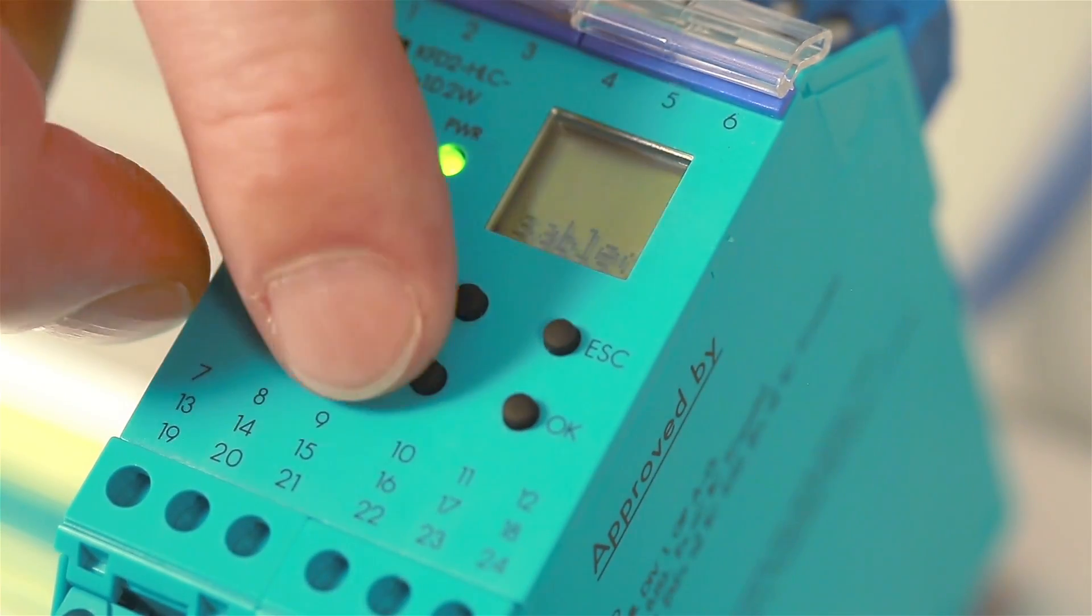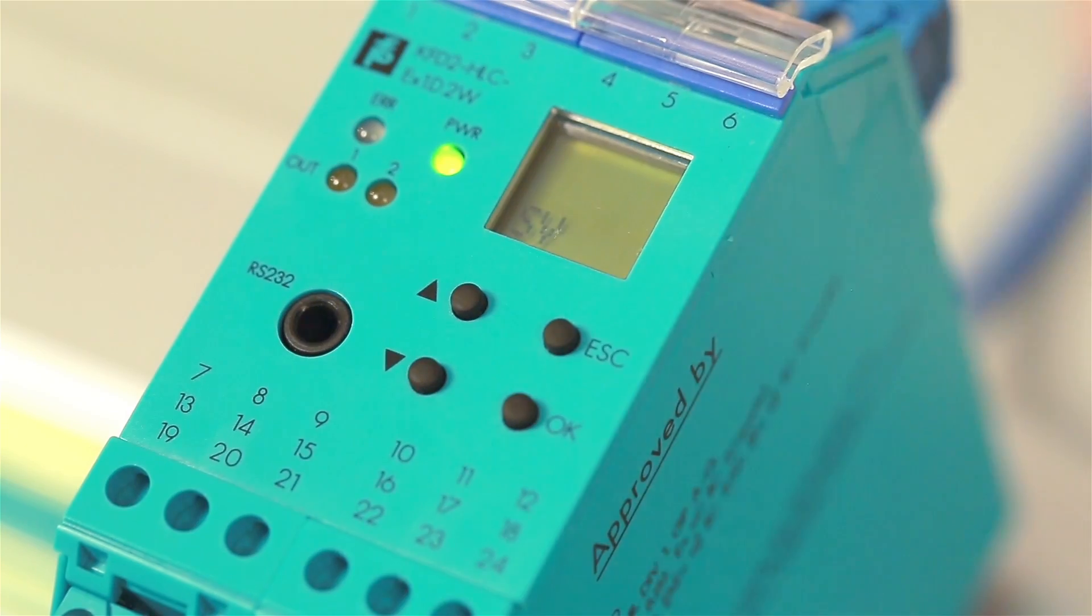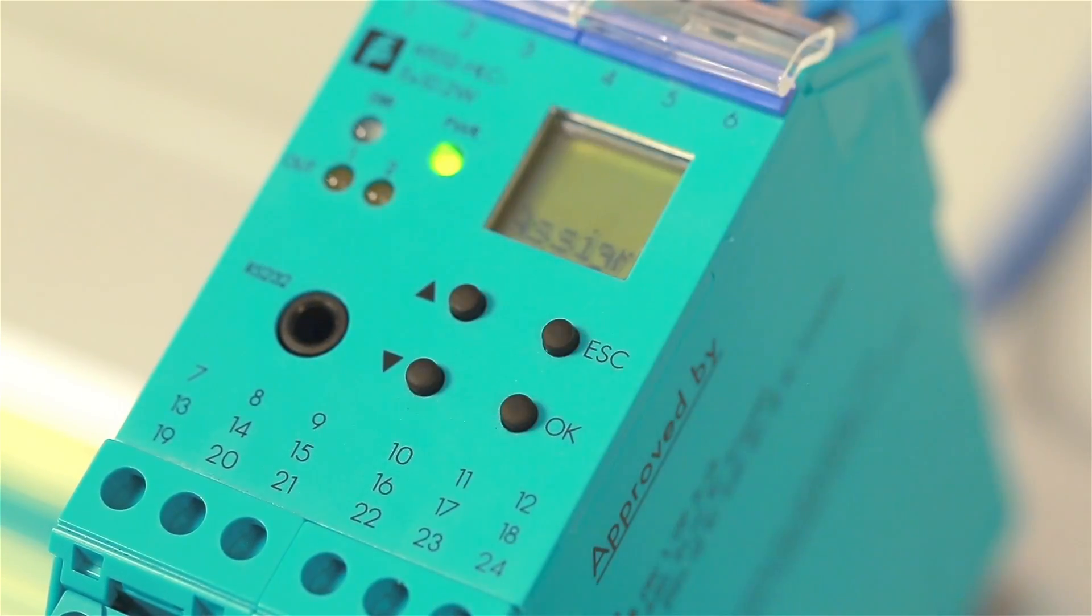We will set a few values as an example and begin with the secondary variable. For this, we navigate via disabled and primary variable to secondary variable, confirm with OK and go back with ESC.